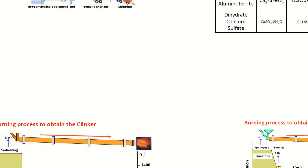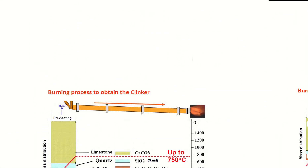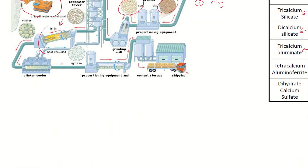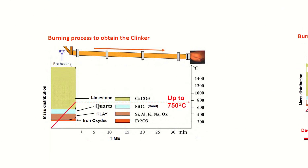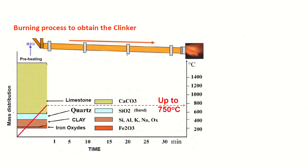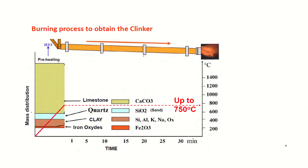Let's move on to the burning process — the burning process that happens inside the kiln. If we have a closer look at the exact procedure inside the kiln, we can break it down into four separate phases. Up to 750 degrees Celsius, you still have your main components intact: limestone, quartz, clay, and the iron oxides.